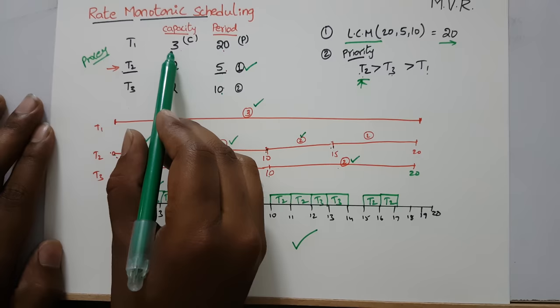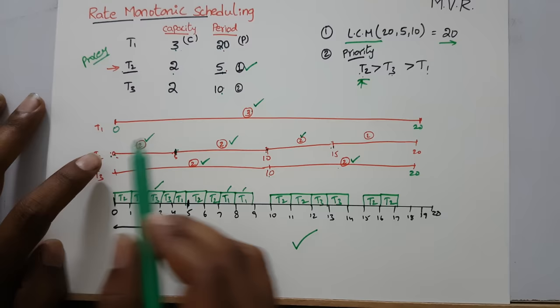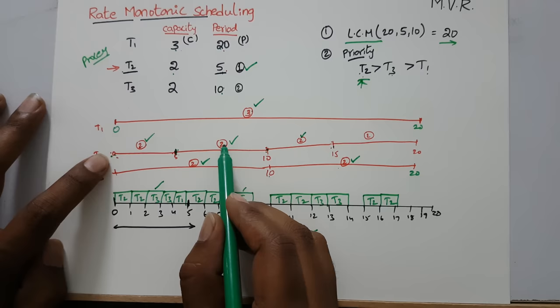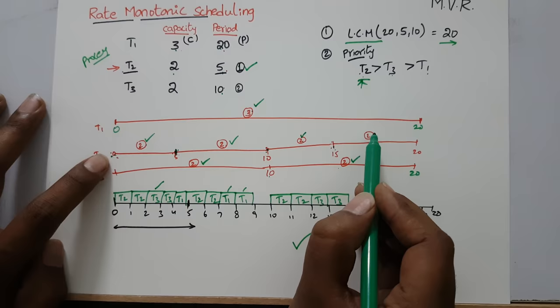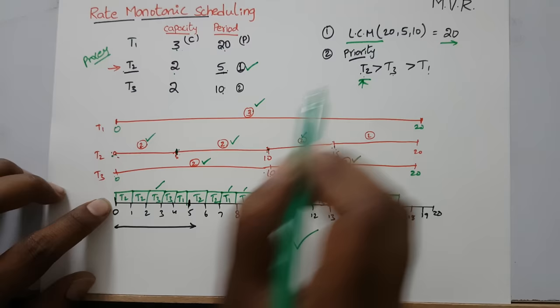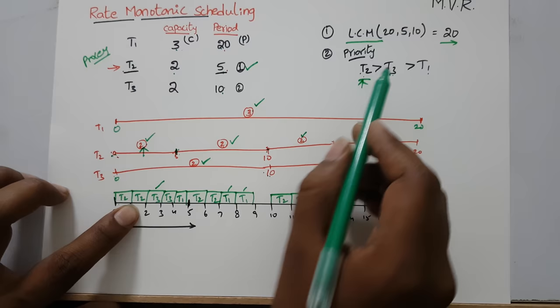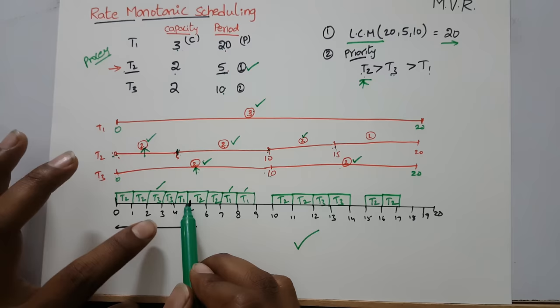T1 executes 3 units in a period of 20, so from 0 to 20 it executes only 3 units total. T2 executes 2 units for every 5-unit interval: 2 from 0-5, 2 from 5-10, 2 from 10-15, and 2 from 15-20. T3 executes 2 units for 0-10 and 2 units for 10-20. We start with T2 due to its highest priority, and it completes 2 units in the 0-to-5 window. Then T3 comes and executes its 2 units.